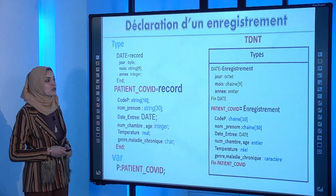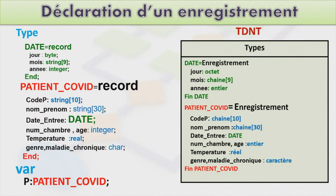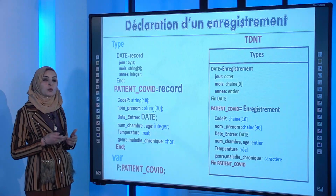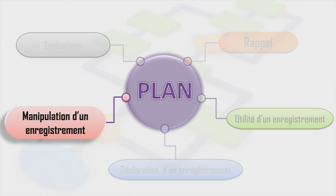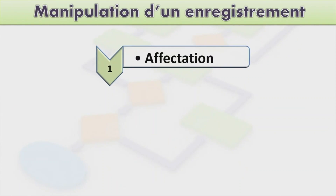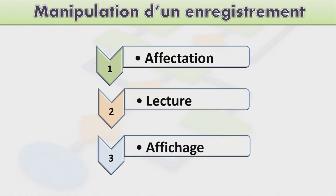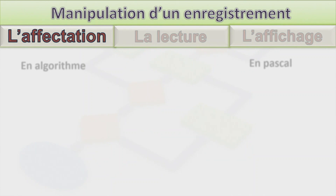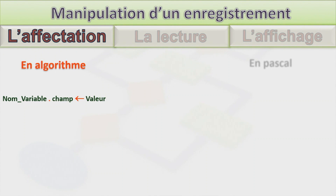Pour la déclaration des enregistrements au niveau du TDNT, l'ordre n'est pas important. Mais en Pascal, on doit respecter l'ordre de déclaration pour que le compilateur ne génère pas d'erreurs. Passons maintenant à la quatrième partie : la manipulation d'un enregistrement, avec les opérations d'affectation, de lecture et d'affichage.